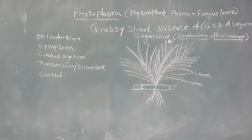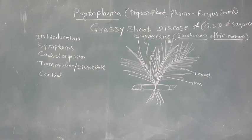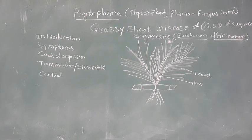Phytoplasma lacks a cell wall but has a triple membrane. Examples of phytoplasmal diseases include: grassy shoot disease of sugarcane (GSD), little leaf of brinjal, white leaf of sugarcane, phyllody of sesame, phyllody of parthenium, and phyllody of Congress grass. These are all included under phytoplasmal diseases.